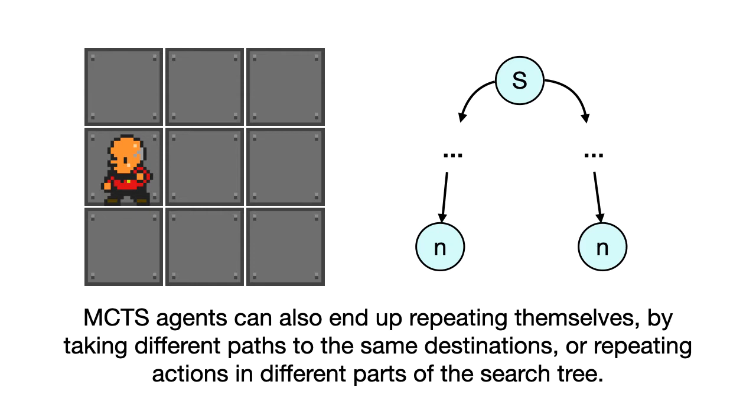And the bigger this tree is, the more of a problem MCTS has because it has more nodes to search through, more nodes to balance, more nodes to consider, and it's just generally a lot more work for the algorithm.